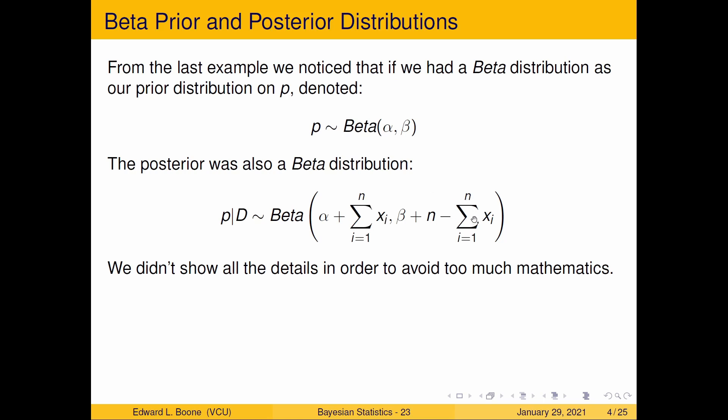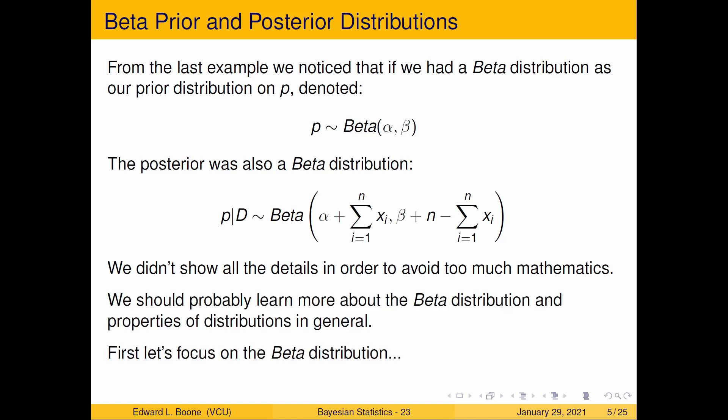I avoided showing you all the details, but you notice that there's quite a bit of mathematics involved here and you'll keep seeing mathematics, but we'll keep skirting around it. We should probably learn more about the beta distribution and the properties in general, and then once we have that, we can do the same things with other distributions.